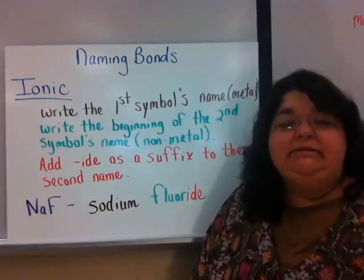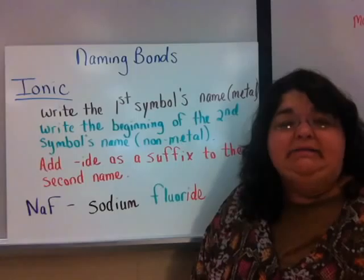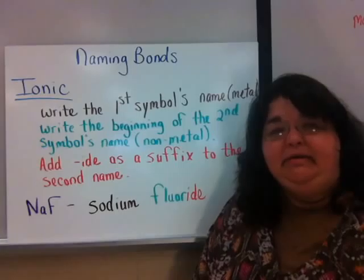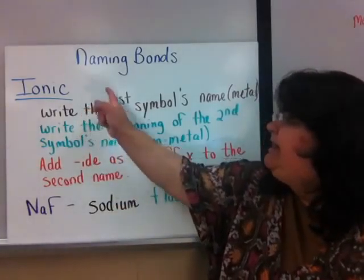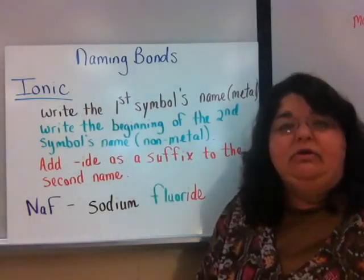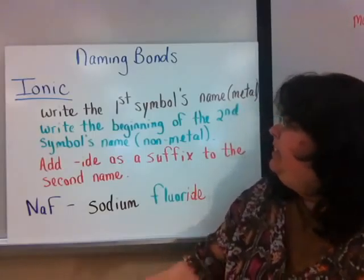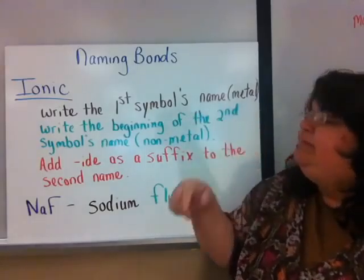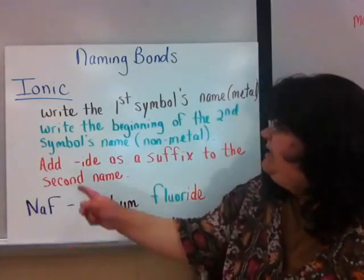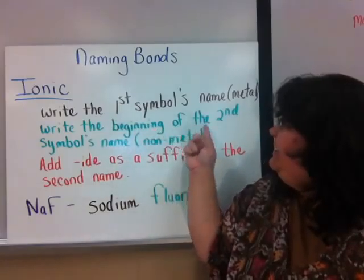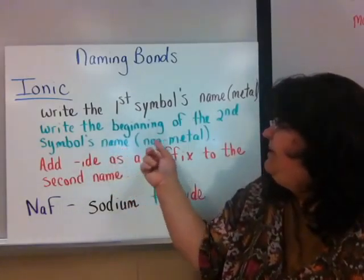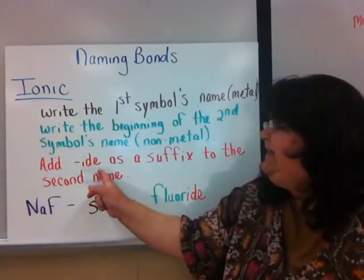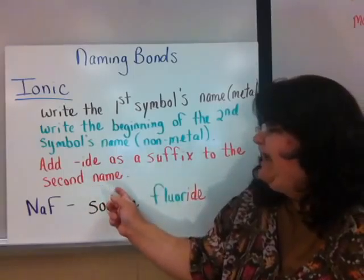Now that we've learned how to classify bonds as ionic or covalent, we need to learn how to name them. With an ionic naming system, there are a few simple steps to follow. First, you're going to write the first symbol's name — that's usually your metal. Then you write the beginning of the second symbol's name, usually your non-metal, and add '-ide' as a suffix to the second name.